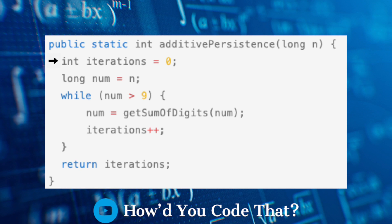In our first method, additive persistence, we initialize a variable, iterations, to zero. Next, we initialize a variable named num to the value of the incoming number.